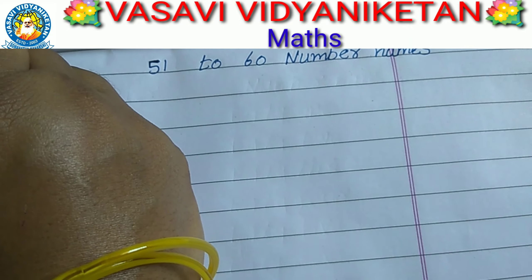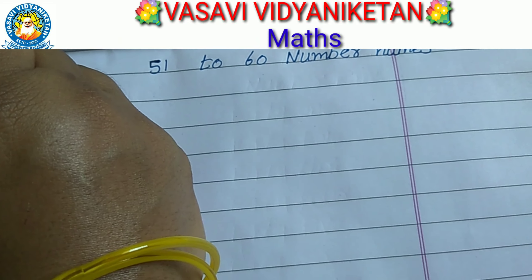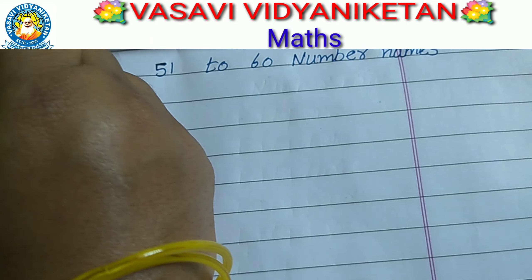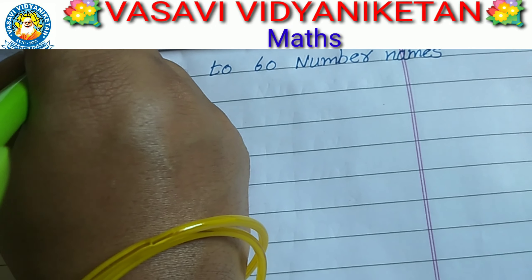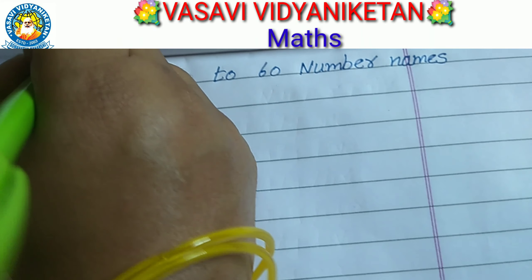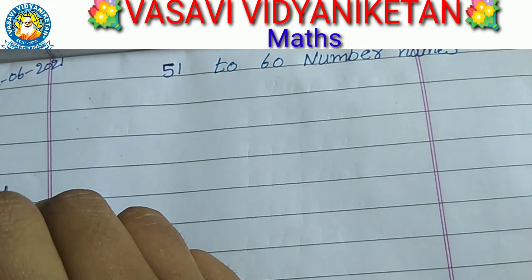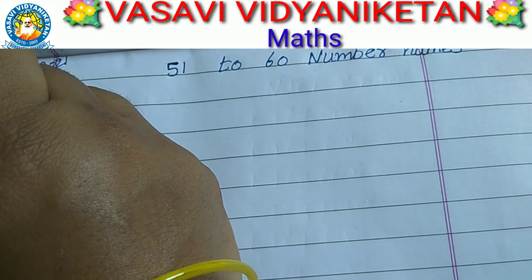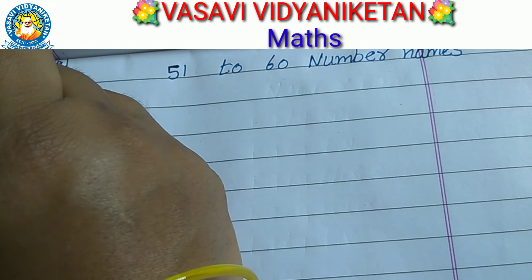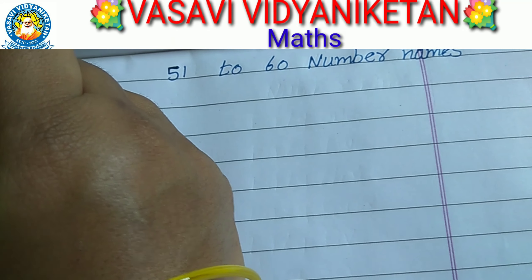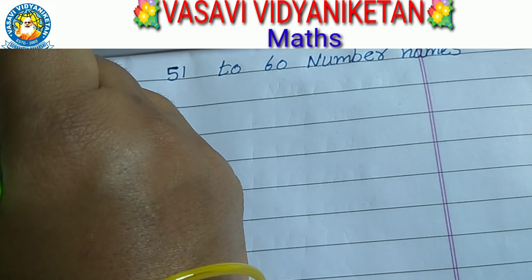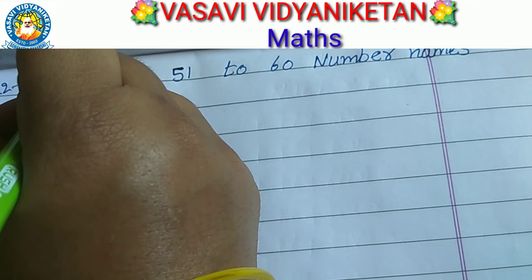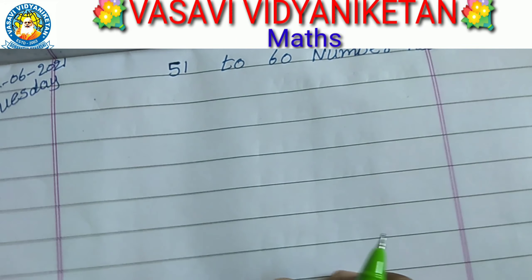What is the date today? 22, 6th month, 2021. What day is today? Tuesday. T-U-E-S-D-A-Y. Tuesday.